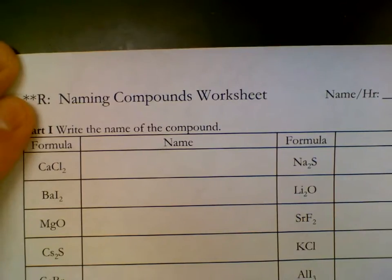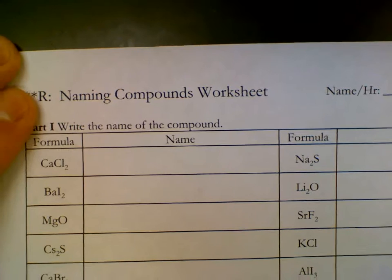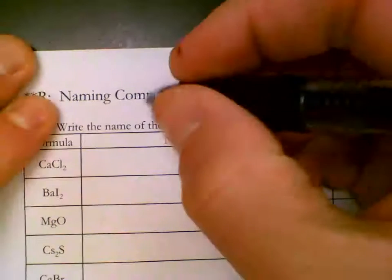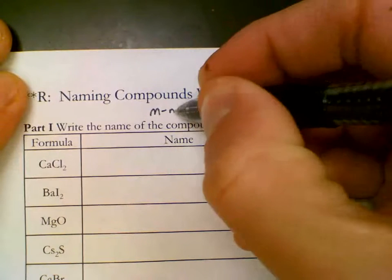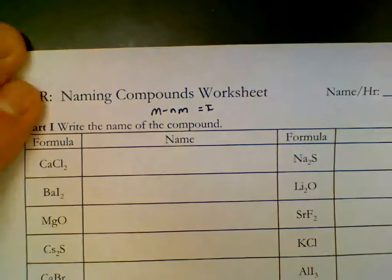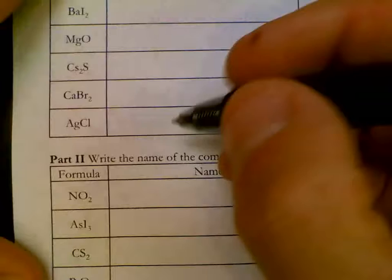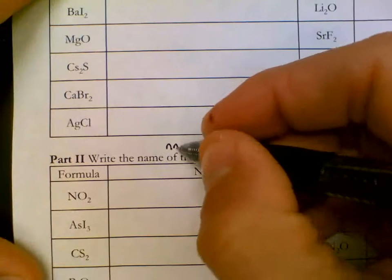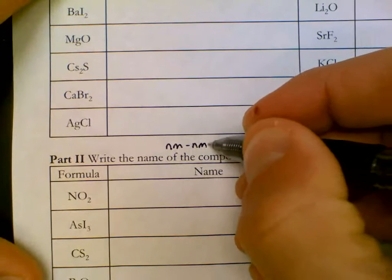Binary means two, so two atom compounds. Ionic are going to be metals stuck to non-metals. That's how we know it's ionic. That's part one. Part two is a non-metal stuck to a non-metal making that covalent.